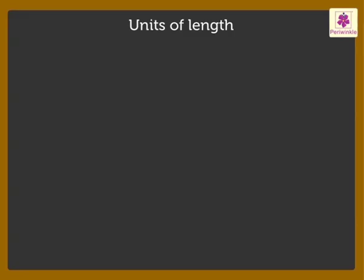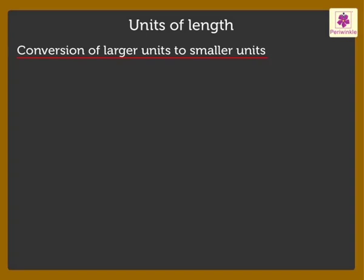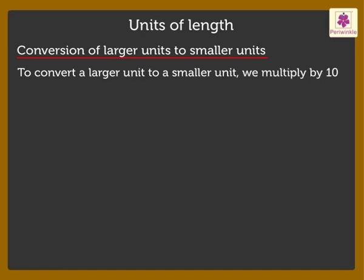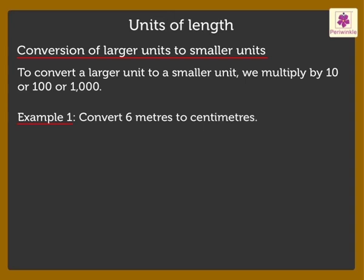Now, let us learn conversion of larger units to smaller units. Here, to convert a larger unit to a smaller unit, we multiply the number by 10 or 100 or 1000. Convert 6 metres to centimetres. So, 6 metres is equal to 6 multiplied by 100 is equal to 600 centimetres.